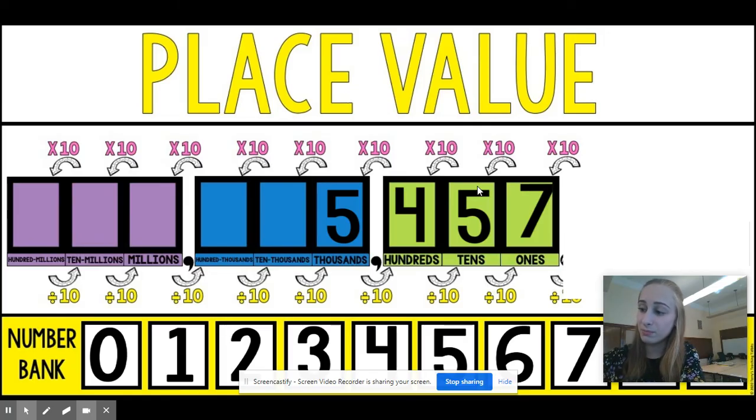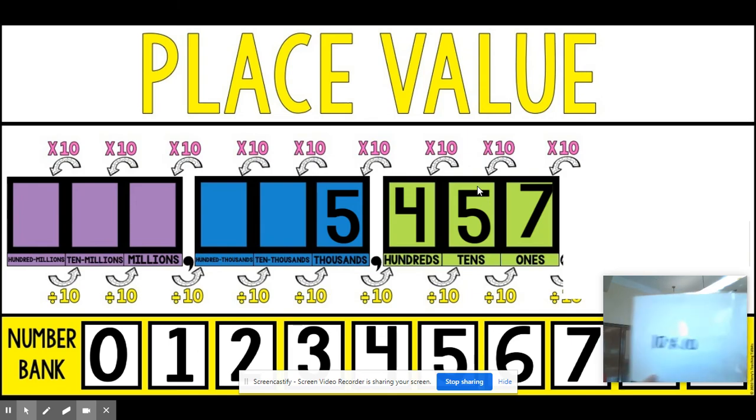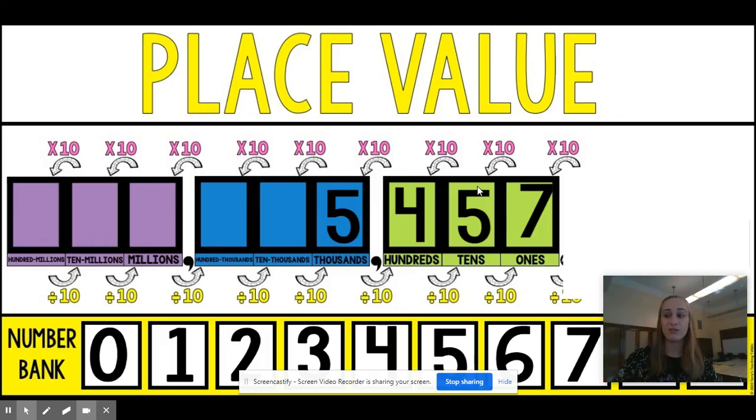We know that when we have a number that we multiply by 10, the digit stays the same and we add a zero. So 10 times 10 equals 100. That means that the value of this first five is 100 times greater than the value of the second five. I'll say that again. The value of the first five is 100 times greater than the value of the second five. And that's because it's two places away, two jumps away in our place value chart. So that means it's 100 times greater.